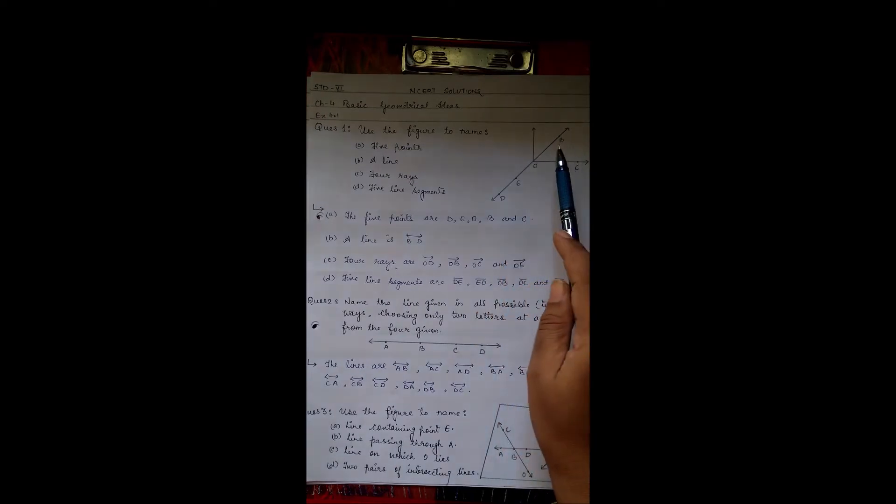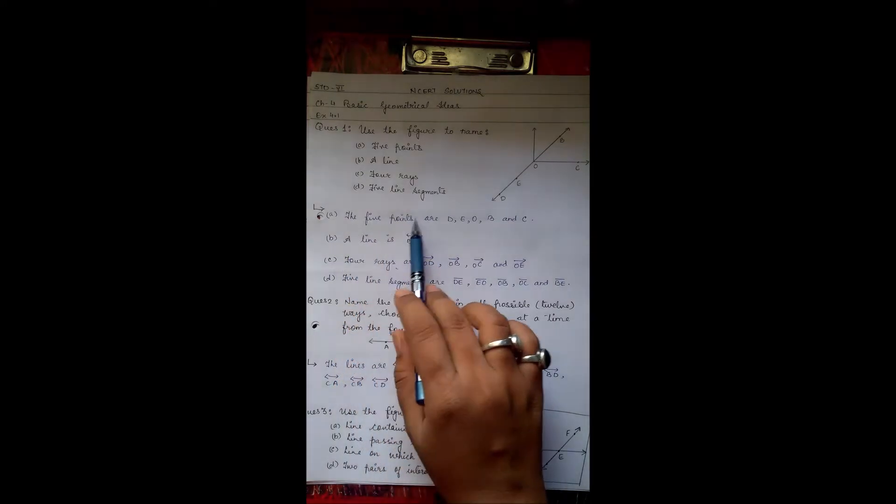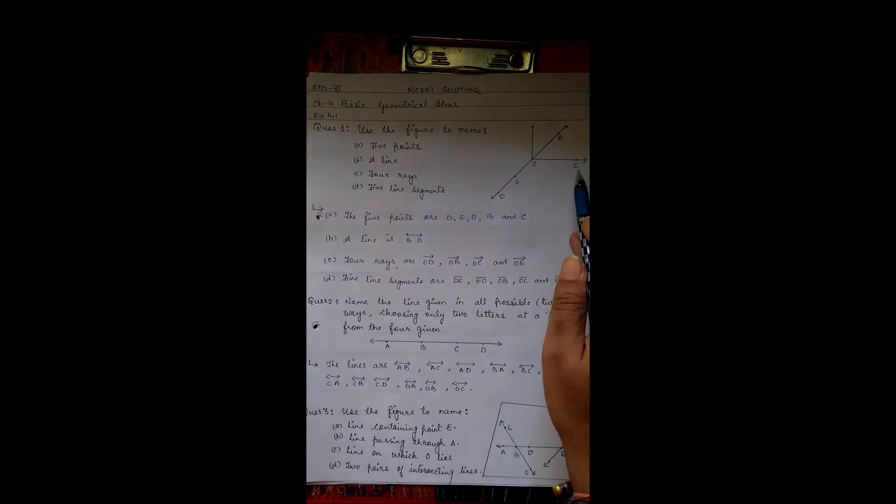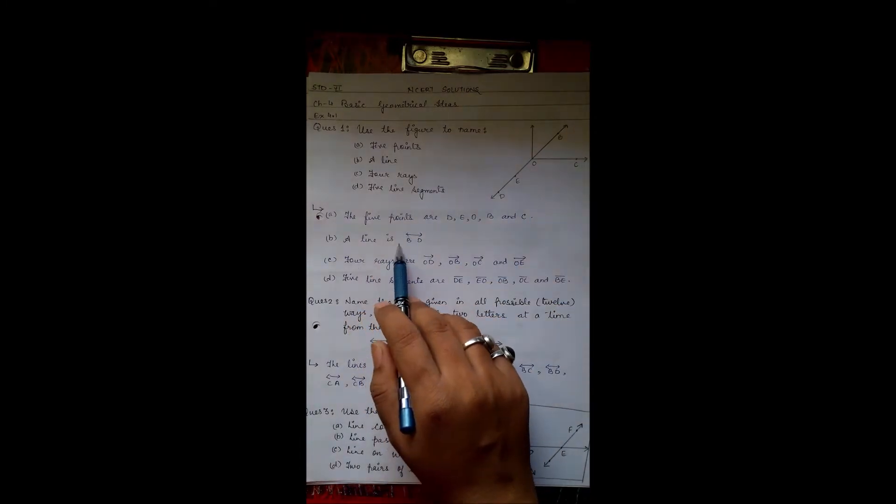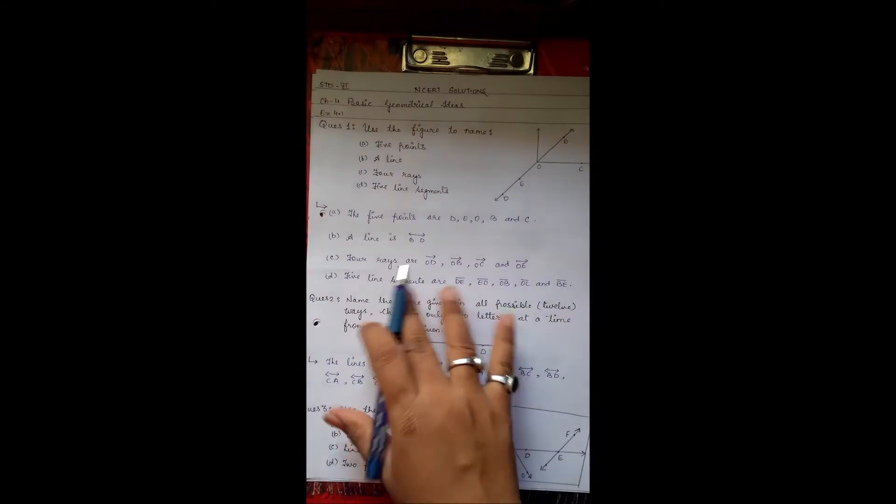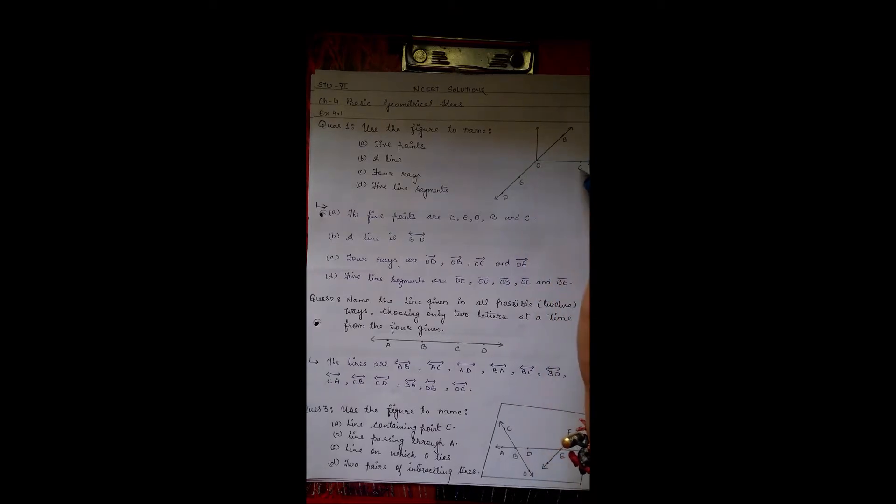The points are given. First we have to find the five points. The five points are D, E, O, B and C. A line is line BD. Four rays are OD, OB, OC and OE. Five line segments are DE, EO, OC and BE.